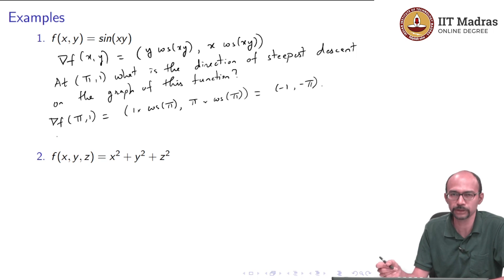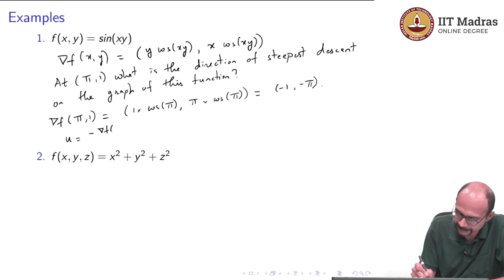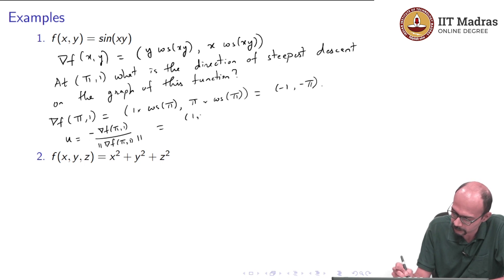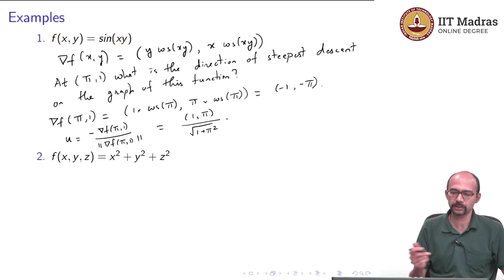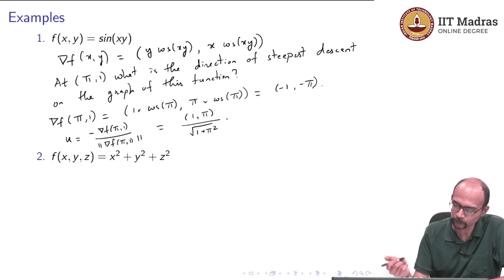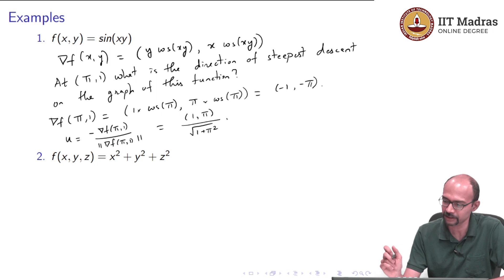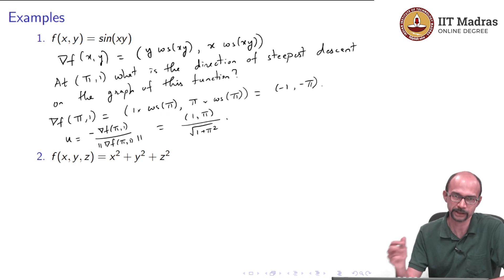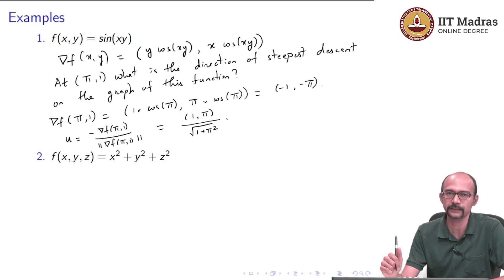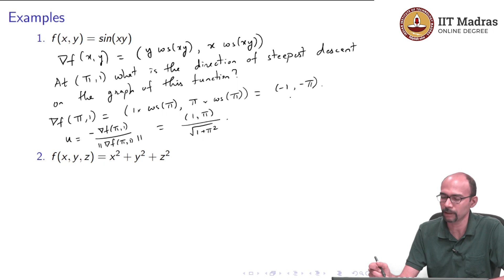The direction of steepest descent is opposite to the gradient, so u equals minus gradient f at (π, 1) divided by its norm, which is (1, π) divided by the square root of 1 plus π². That is the direction in which the function decreases fastest. For steepest ascent, you move along (−1, −π) normalized. And for the direction of no change, you move perpendicular to the gradient — that is the vector (π, −1) or (−π, 1).